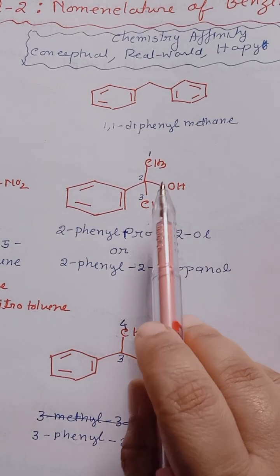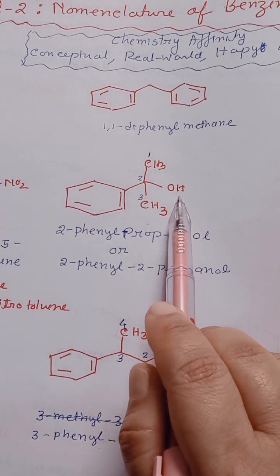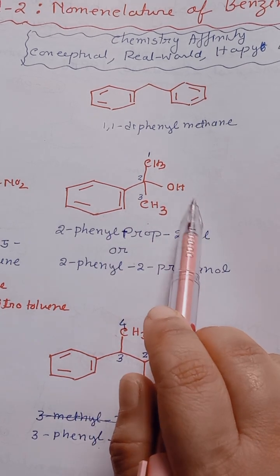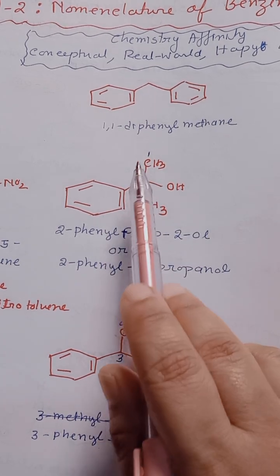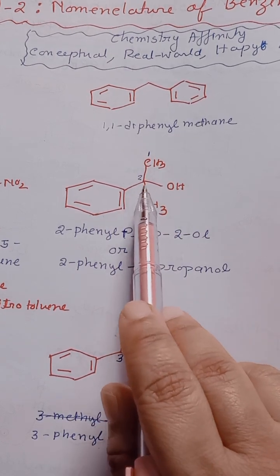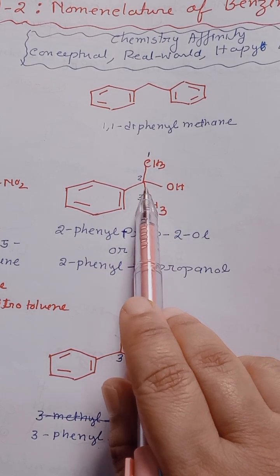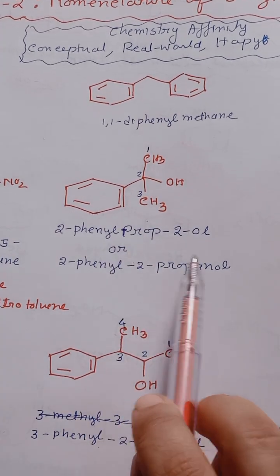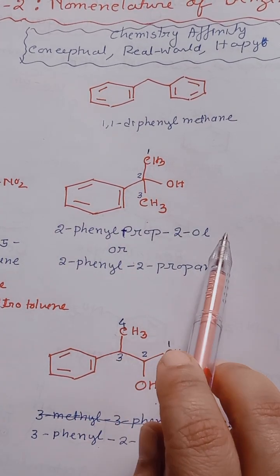Next compound: here we can see OH functional group is present, phenyl group is also present. OH will get the priority. But if we start the numbering from top to bottom or bottom to top, both cases OH will get two numbers. So that's why the nomenclature will be 2-phenyl-2-propanol or 2-phenylprop-2-ol.